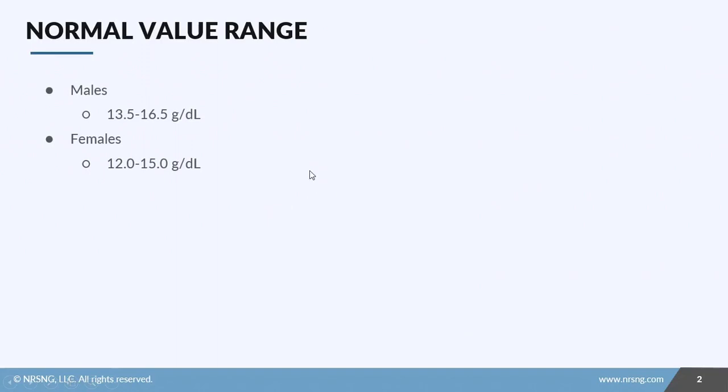All right, in this lesson we're going to take a look at hemoglobin. The first thing we want to look at when we're talking about hemoglobin are the normal values for our patients. Hemoglobin is going to be normal depending on whether your patient is male or female. Males have a normal hemoglobin level of 13.5 to 16.5 grams per deciliter, and females have a normal hemoglobin level of 12 to 15.